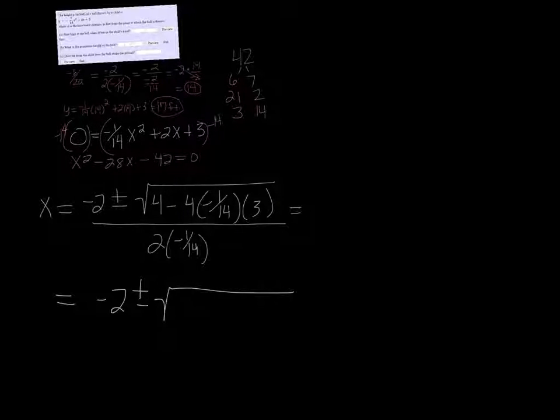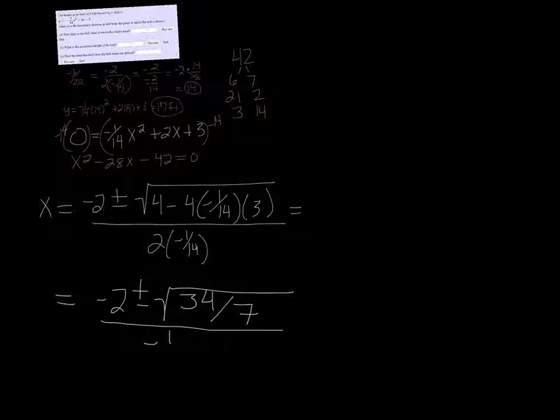So the inside just becomes 34 over 7, and the bottom is going to be negative 1 over 7 if you simplify that.